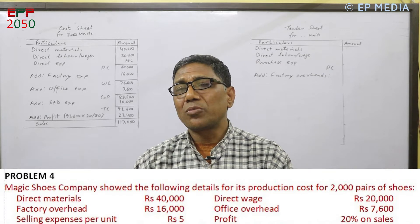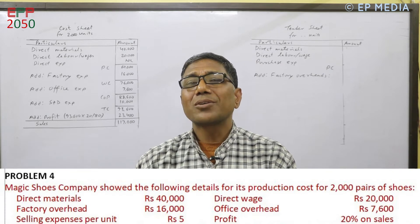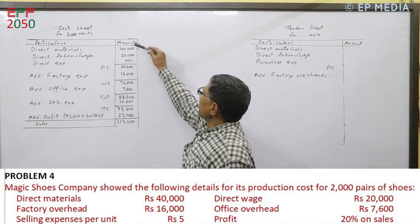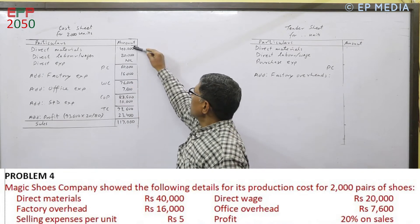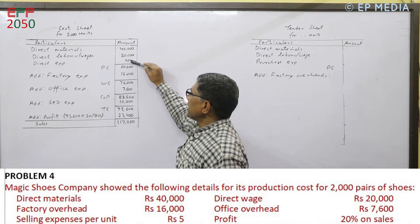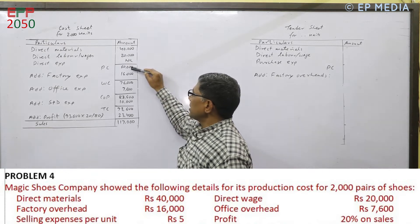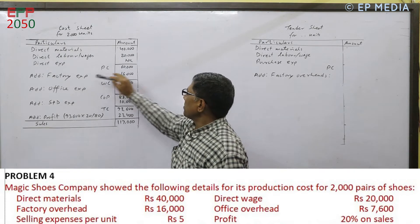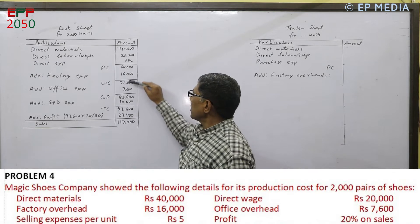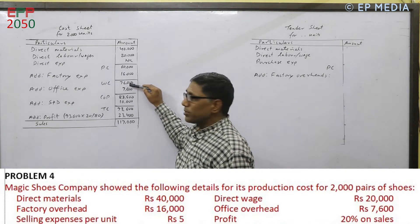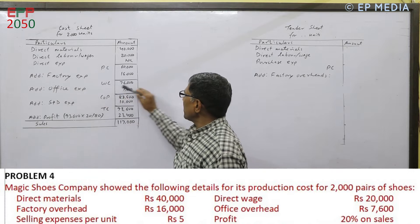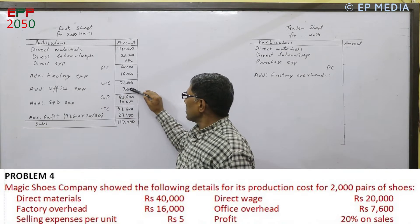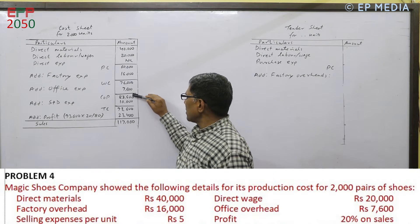So we have to make a cost sheet. We have to account for direct material, direct labor, and direct expenses, which gives a prime cost of 60,000. Adding factory overhead gives us 76,000. Then we add office expenses, which is 7,600, giving a total of 83,600.